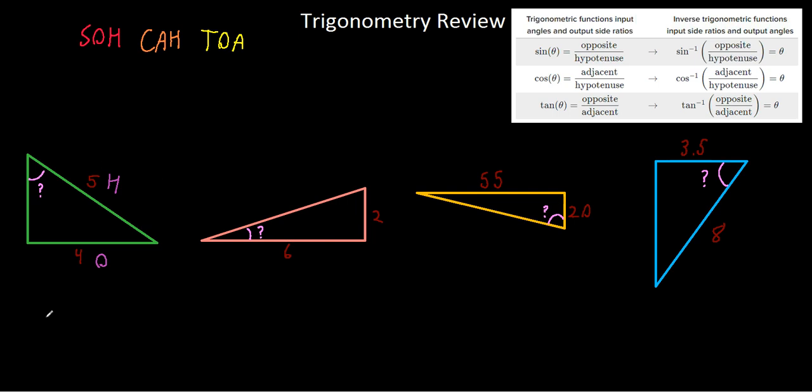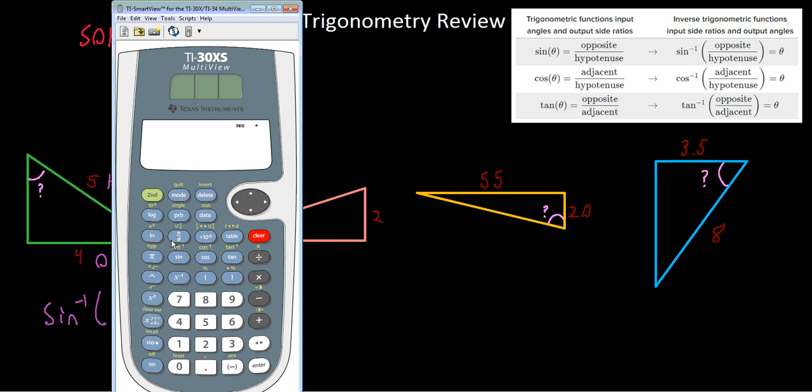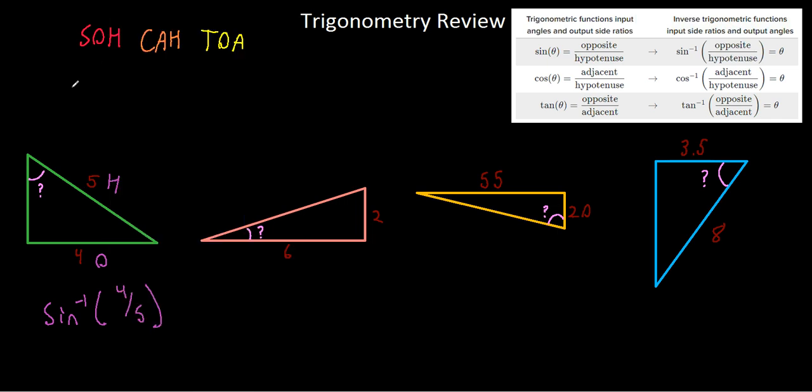That's just going to be the inverse sine of opposite over hypotenuse, which is just 4 over 5. So we can type that into our calculator. We take the inverse sine, which is over sine, or we hit the second button first, and we just hit 4 over 5. We get about 53 degrees.